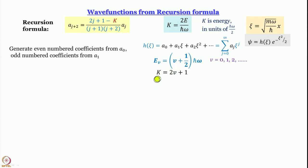So k is quantized, which is not a surprise. The smallest value of v is 0, so the smallest value of k is 2(0)+1 = 1; for v=1, k=3; and so forth. Now we plug k = 2v+1 into the recursion formula.